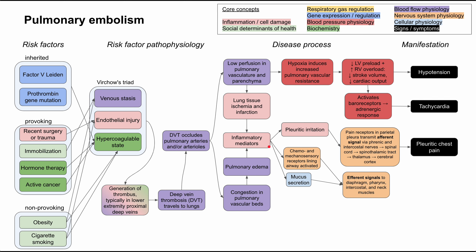In addition, the inflammatory mediators also trigger chemico- and mechanosensory receptors lining the airway. This, along with mucus secreted from the inflammatory response, results in efferent signals — signals being sent away from the CNS — to the diaphragm, the pharynx, the intercostal muscles, and the neck muscles. This coordinated movement of all those muscle groups results in a cough, so the patient will also have cough.